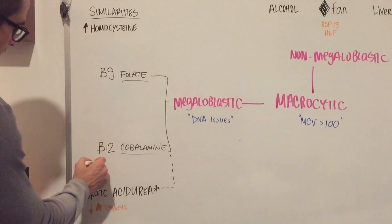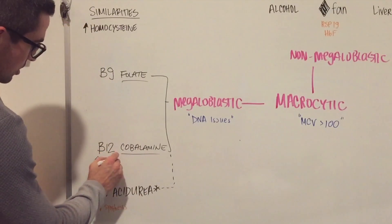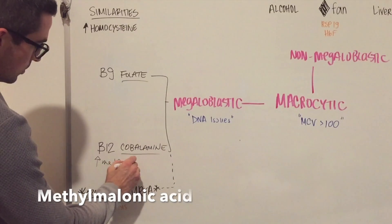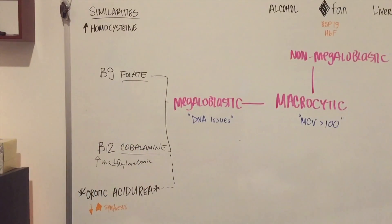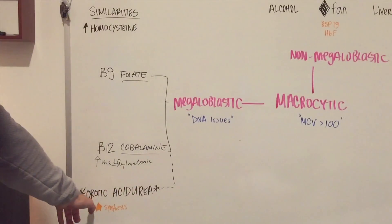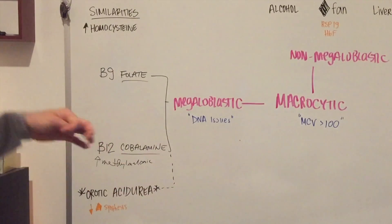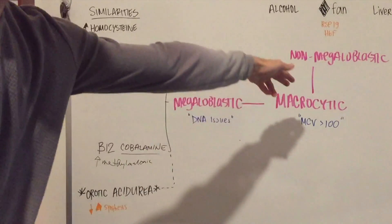So if you see an increase in homocysteine and an increase for methylmalonic, then you're going to want to think B12. And if you do Firecracker, you're also going to notice that orotic aciduria is another megaloblastic macrocytic anemia.